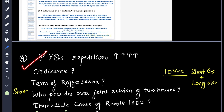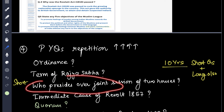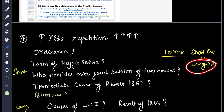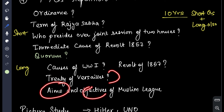The fourth tip is that previous year questions have a very high repetition rate. If you go through 10 years of papers, you will find many questions are repeated — like Ordinance, term of Rajya Sabha, who presides over a joint session of two houses, immediate cause of the Revolt of 1857, and what is quorum. Long answer questions are also repeated, like causes of World War I, the Treaty of Versailles, and the aims and objectives of the Muslim League.